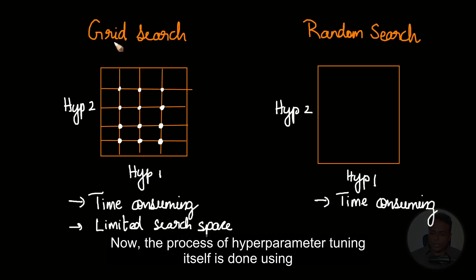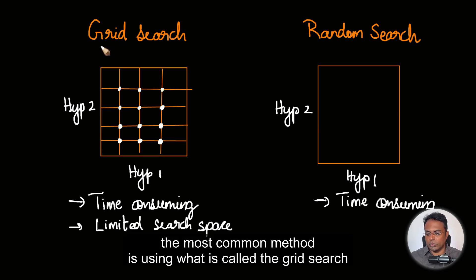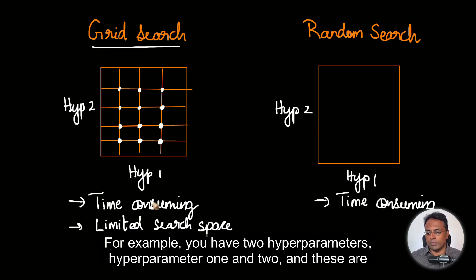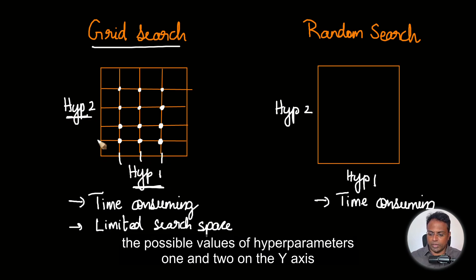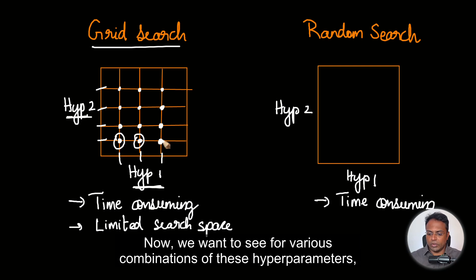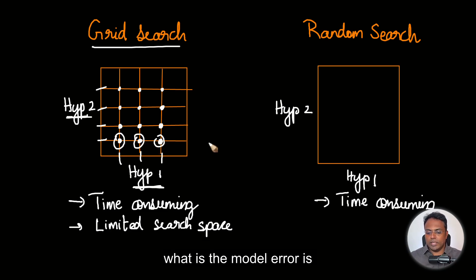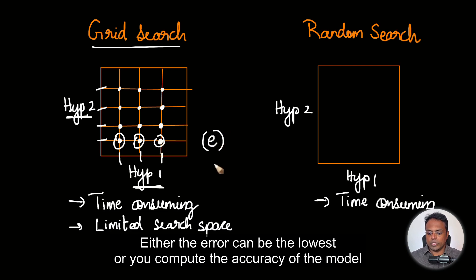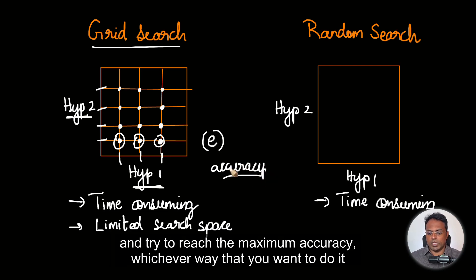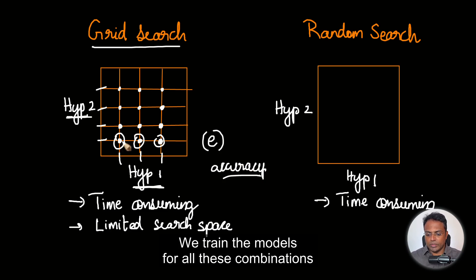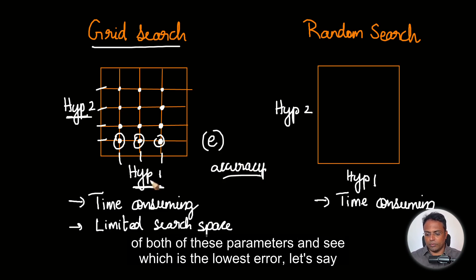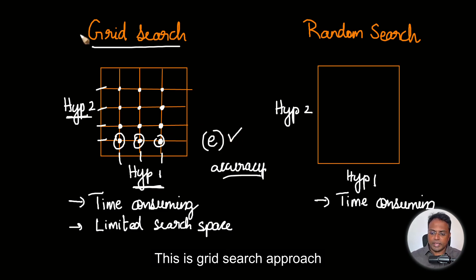The process of hyperparameter tuning itself is done using — the most common method is — what is called the grid search. For example, you have two hyperparameters, hyperparameter 1 and 2, and these are the possible values on the y-axis. We want to see for various combinations of these hyperparameters what the model error is. Either the error can be the lowest, or you compute the accuracy and try to reach the maximum. We train the models for all these combinations and see which gives the lowest error. This is the grid search approach.